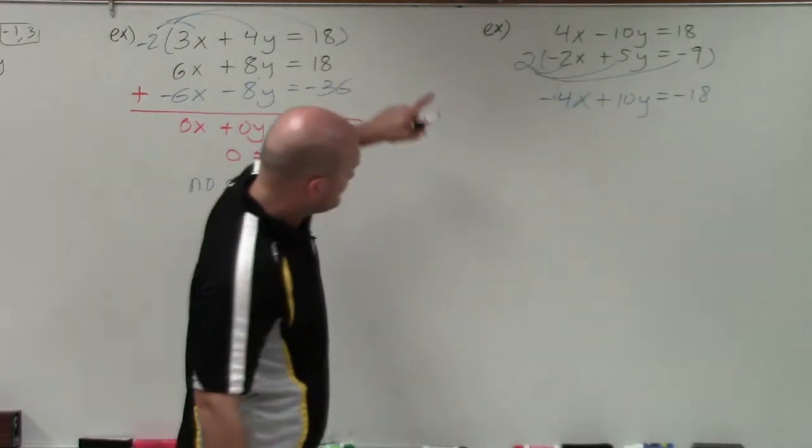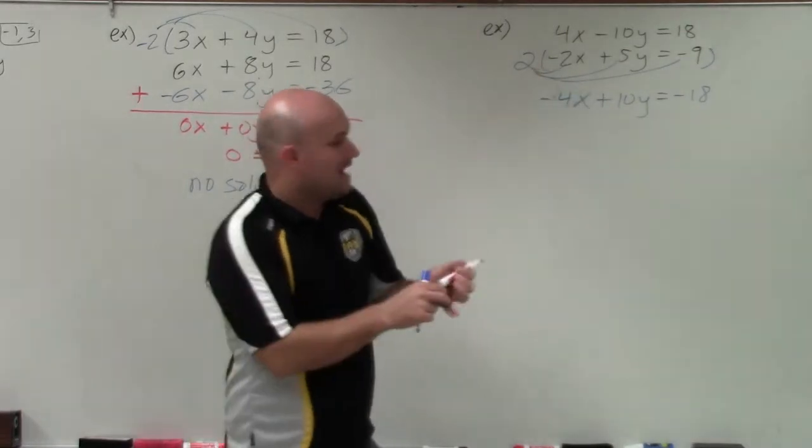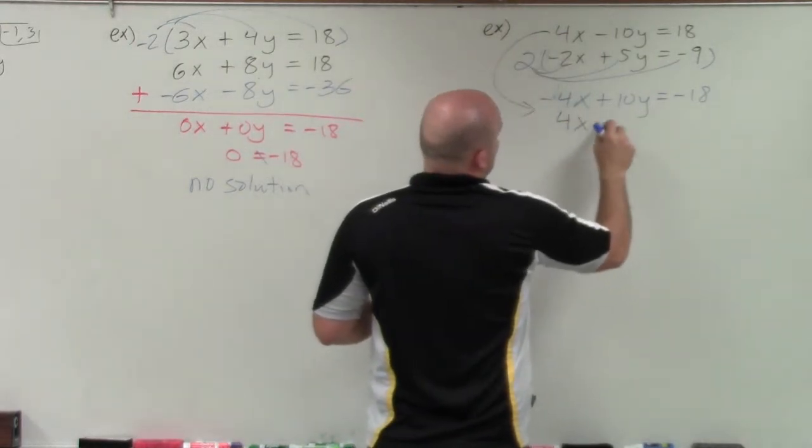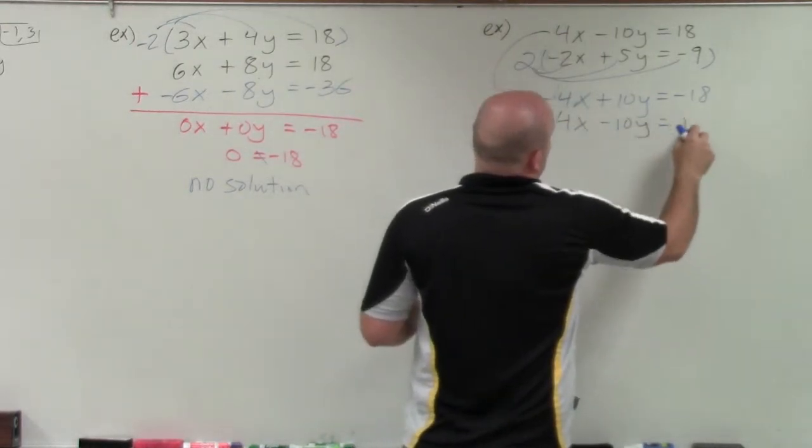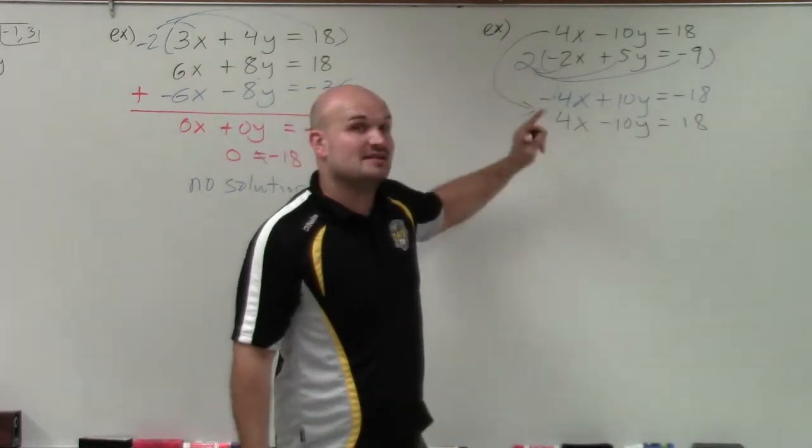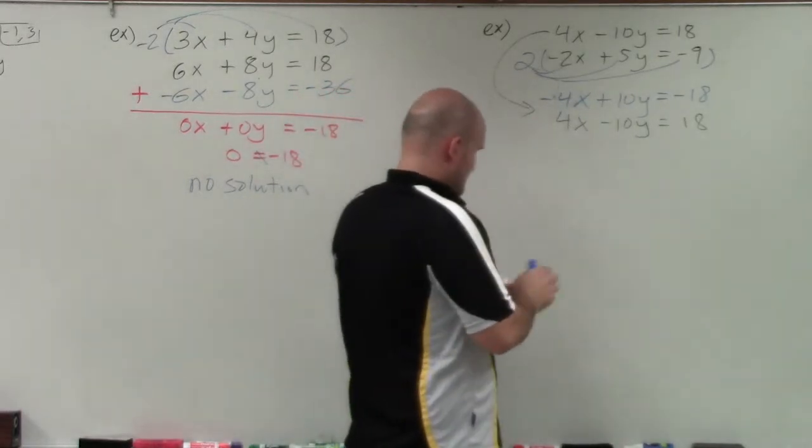Now, since I transferred over the bottom equation, I'm going to rewrite the top equation again below it. So I have 4x minus 10y equals positive 18. So again, you can see that the coefficients now are exactly the same, except one's negative, one's positive. So therefore, I will add the two equations.